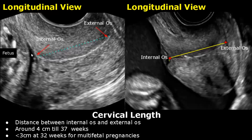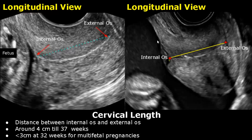The transvaginal approach is the most accurate approach for measuring cervical length. The cervix is seen in longitudinal view. One caliper is placed at the internal os, right here — this junction that is towards the fetus, in the left half of the image. And the other caliper is placed right here, at the external os.